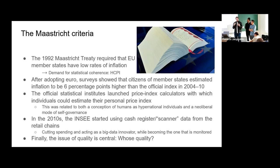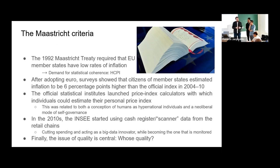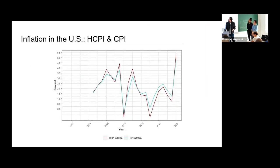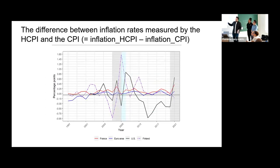I was thinking about this in the case of the harmonized consumer price index. I got the understanding that the harmonized CPI might also underestimate or estimate inflation to be less. I checked how it compares in France, the Euro area, the US, and Finland — calculating inflation rates using both the harmonized index and the national CPI, then taking the percentage point difference between them. We have France, the Euro area, the US, and Finland.